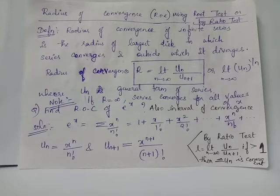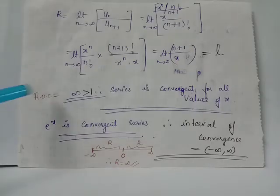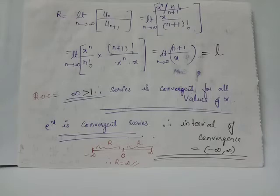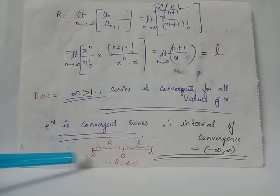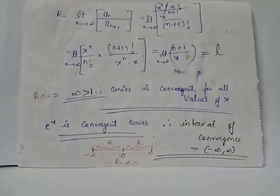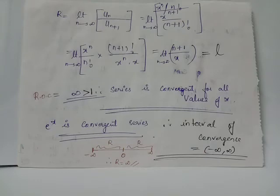When we considered the series e raised to x, we had obtained radius R equals infinity, from which the interval of convergence is the complete real line, represented as the open interval from minus infinity to plus infinity. This can be viewed as centered at 0, and from the center the endpoints at minus infinity or positive infinity are at infinite distance, which corresponds to the radius of convergence of e raised to x.